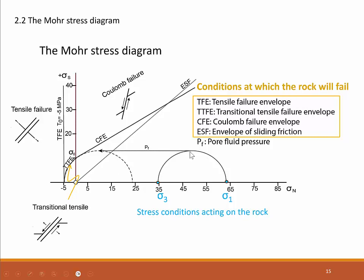An arrow shows the Mohr circle moving from its original position to a position further to the left. This can happen when pore fluid pressures are high, which weakens the rock and makes it behave as if under much lower stress conditions — very different stress conditions that may lead to rock failure. This is a matter we will discuss in the third part of this lecture series on the Mohr stress diagram.